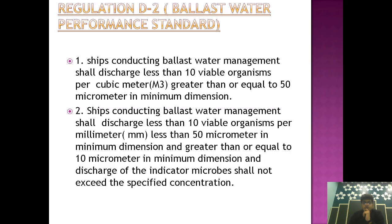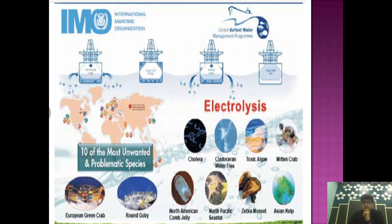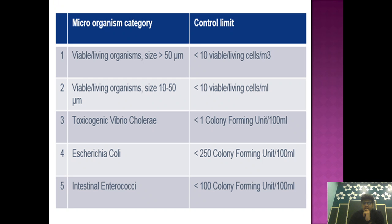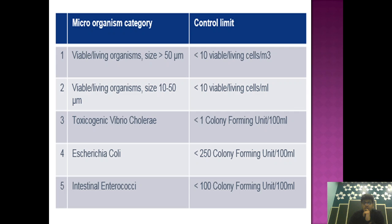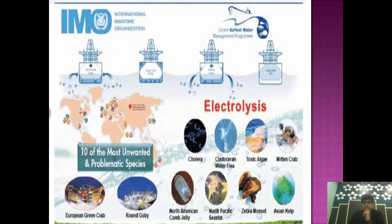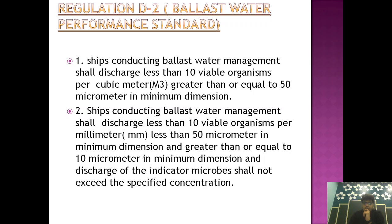So basically, D2 talks about the Ballast Water Treatment System. The treatment system should consist of such parameters that it can deliver certain quality regarding microorganisms. Basically, the ship conducting ballast water management shall discharge less than 10 viable organisms per meter cube, greater than or equal to 50 micrometers in minimum dimension.